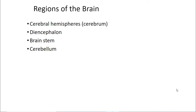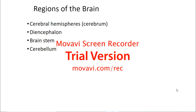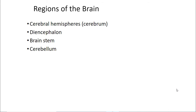The regions we'll cover are the cerebral hemispheres, diencephalon, brainstem, and cerebellum. With the cerebral hemisphere, we'll talk about the different lobes. For the diencephalon, we'll talk about the different parts that make it up. We'll also talk about the parts that make up the brainstem and the cerebellum.